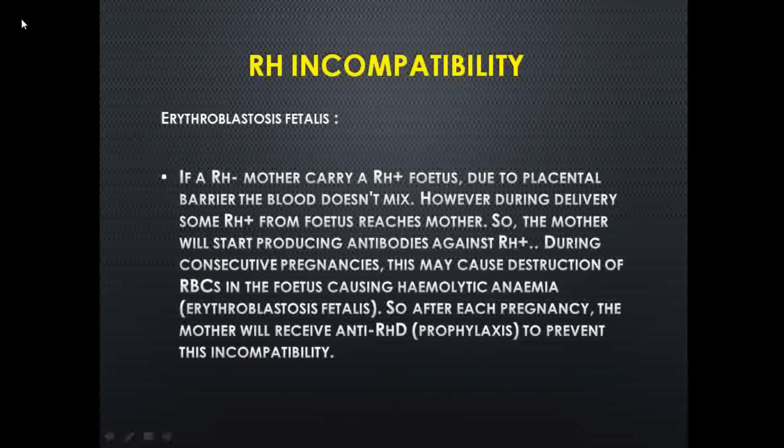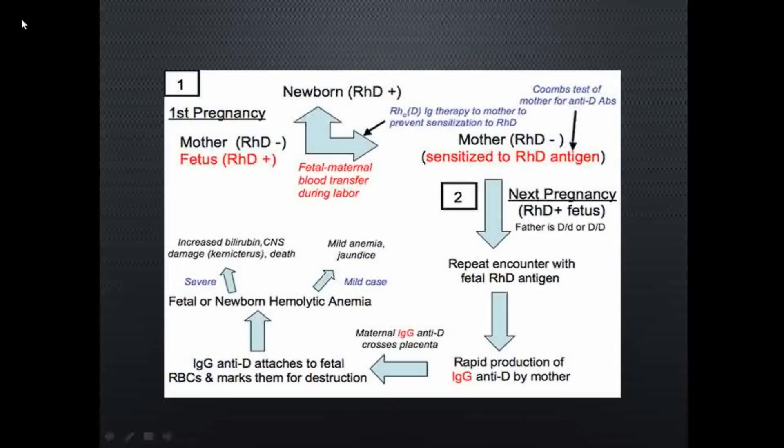If an Rh negative mother is carrying an Rh positive fetus, due to the placental barrier the blood doesn't mix. However, during delivery some Rh positive antigens from the fetus reach the mother's blood, and the mother starts producing antibodies against Rh positive antigens. During consecutive pregnancies this may cause destruction of RBCs in the fetus, causing hemolytic anemia — the disease called erythroblastosis fetalis. After each pregnancy the mother receives anti-RhD antibodies to prevent this incompatibility.